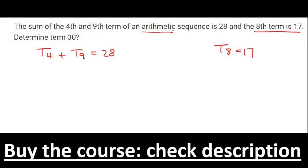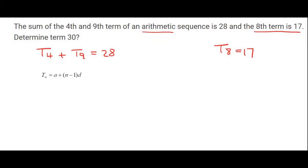They tell us that it's an arithmetic sequence and so we can use the formula. In the place of term 4, we could say A plus 4 minus 1 times D. Then we can fill in term 9 using this formula, so that would be A plus 9 minus 1 times D, and that equals 28.